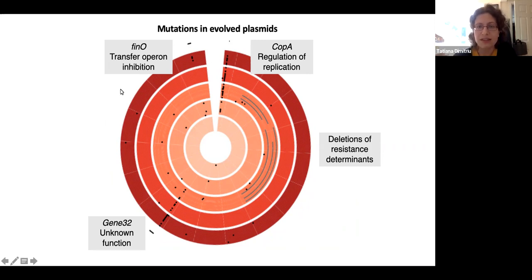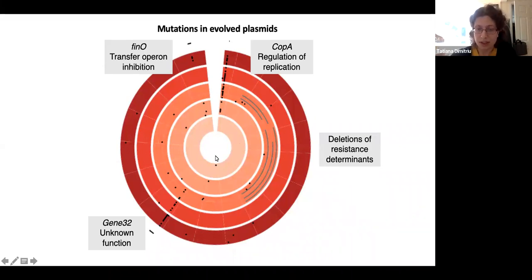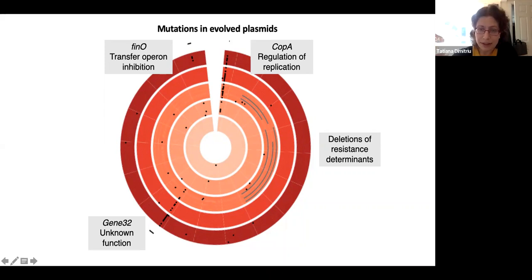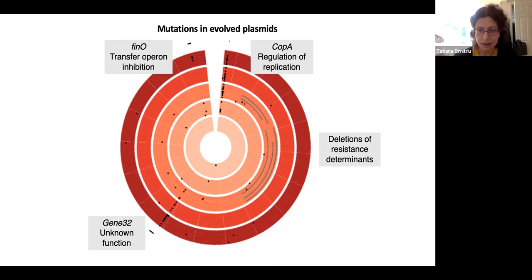These are the results from the sequencing analysis. Each circle is a plasmid genome, with no-immigration treatments at the center. There was very little evolution — few mutations detected without immigration — which fits with the phenotypic data. With immigration treatments, on the outside, there were many mutations. In gray are large deletions: for a few clones, we saw large deletions of antibiotic resistance determinants, because plasmids evolved in the absence of antibiotics and were free to lose antibiotic resistance genes.